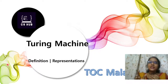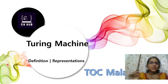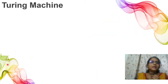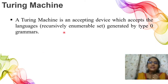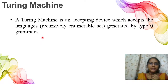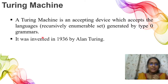What we will learn is the formal definition and representation of the Turing Machine in this video. A Turing Machine is an accepting device which accepts the languages — specifically the recursively enumerable set generated by Type 0 grammar. It was invented in 1936 by Alan Turing.